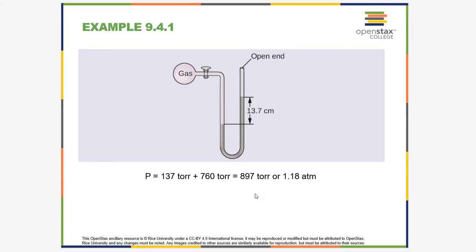In the second example, the J-tube has an open end, so we already have 760 millimeters of mercury pressure. The gas can push up those 760 millimeters plus an additional 13.7 centimeters, which equals 137 torr. The total pressure of the gas is 137 torr plus 760 torr — the atmospheric pressure — equaling 897 torr. Dividing by 760 gives 1.18 atmospheres.